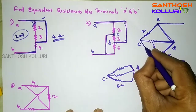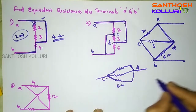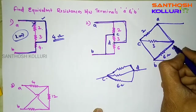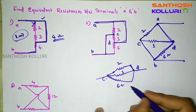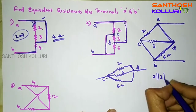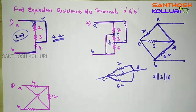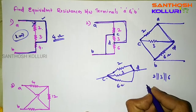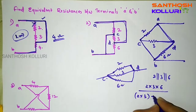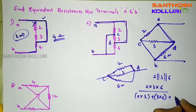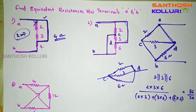Since C and B are the same, and A and D are the same, these three resistors — 2, 3, and 6 ohms — are all in parallel connection. Solving: (2 × 3 × 6) divided by (2×3 + 3×6 + 6×2) = 36 divided by 36, which equals 1 ohm.